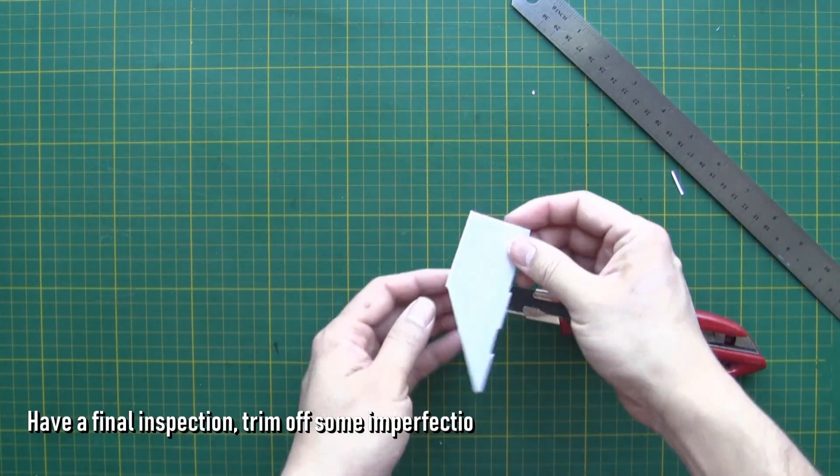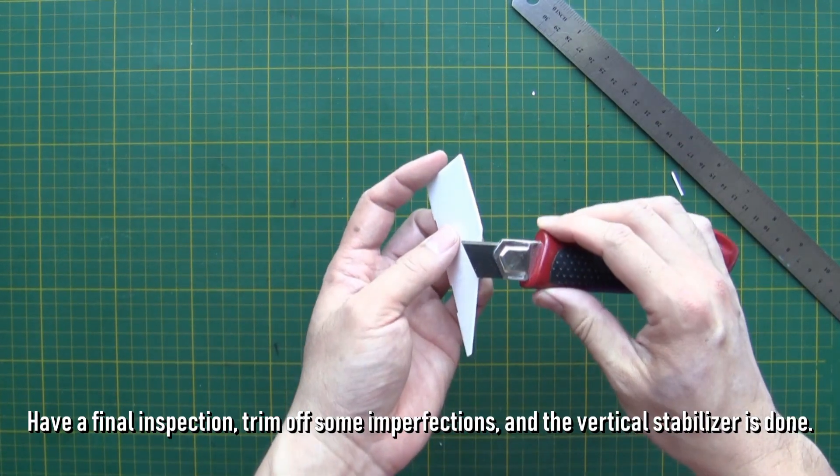Have a final inspection, trim off some imperfections, and the vertical stabilizer is done.